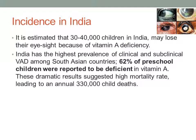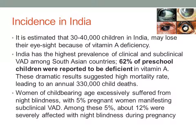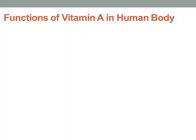62% of preschool children were reported to be deficient in vitamin A. These dramatic results suggest a high mortality rate leading to an annual 330,000 child deaths every year. Women of childbearing age and pregnant women are excessively affected by night blindness, with 5% of pregnant women manifesting subclinical vitamin A deficiency. Among these, about 12% were severely affected with night blindness during pregnancy.